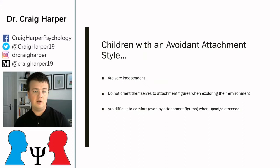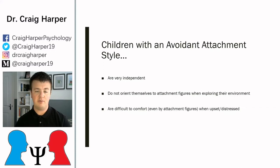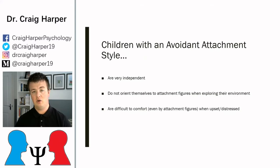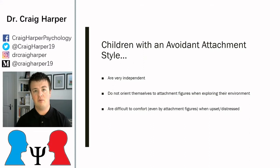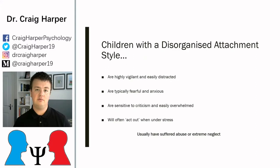Those who are avoidantly attached are very independent. They tend not to orient themselves to specific figures but explore the environment more generally and are quite standoffish. They are very difficult to comfort when they become distressed because they don't see the caregiver as someone they can count on. They feel they have to soothe themselves, but obviously children who don't yet have that ability will therefore be very difficult to soothe when they are upset.